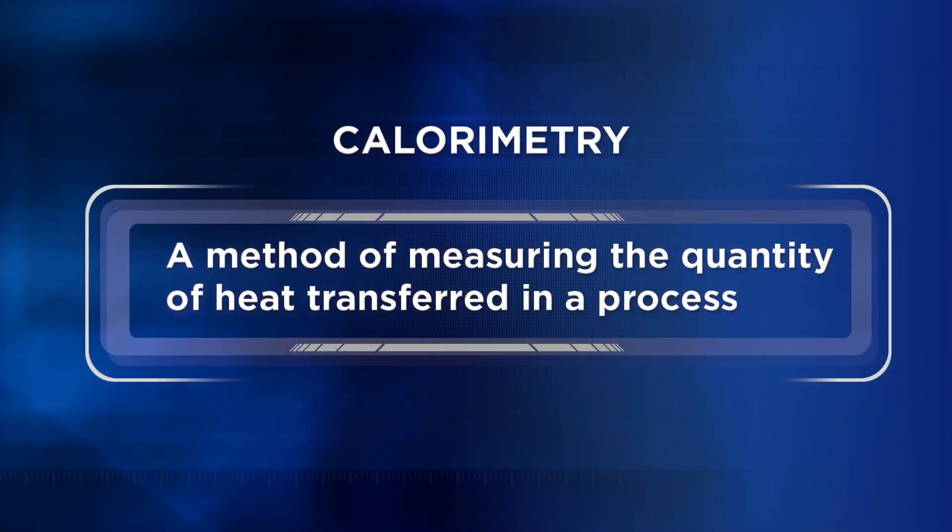And speaking of that, by now you should have developed an explanation for why the metal surface in our lab melted ice more quickly than the plastic. In this unit, we're going to learn why different substances transfer heat at different rates and efficiencies. We'll also learn about calorimetry, a method of measuring the quantity of heat transferred in a process. Right now, let's head back to our classroom to see how our students explained the melting ice mystery.